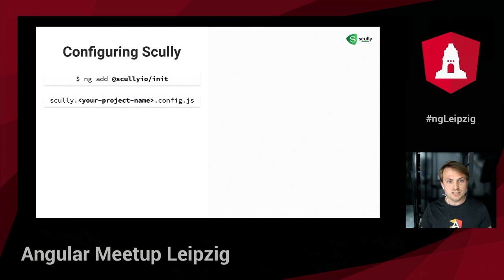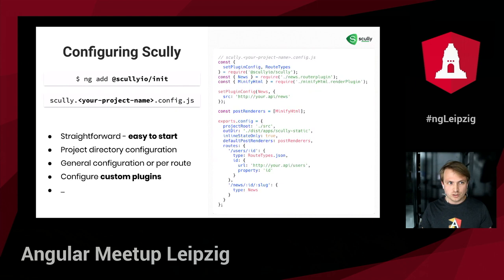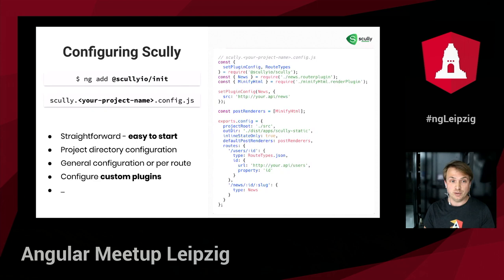To configure Scully on an Angular CLI project we can use the `ng add` command — specifically `ng add @scullyio/init`. This will generate all the files and additions to the code in our project. The base of a Scully project is its config file, which is straightforward and easy to start with. It allows for project directory configuration like the name of the project, source location, and where to output the statically rendered pages. Configuration of the rendering process can be done per route or in general for all discovered routes, and we can hook into all Scully processes by defining our own custom plugins.